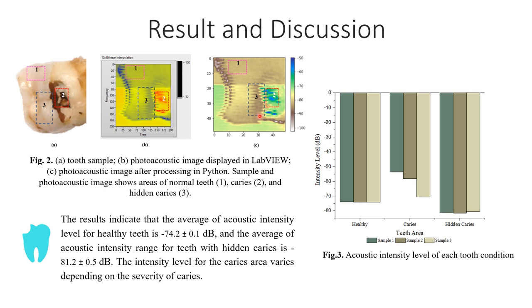Figure 2 also shows the areas of the teeth: normal teeth is pointed by number 1, the caries area pointed by number 2, and the hidden caries area is pointed by number 3.